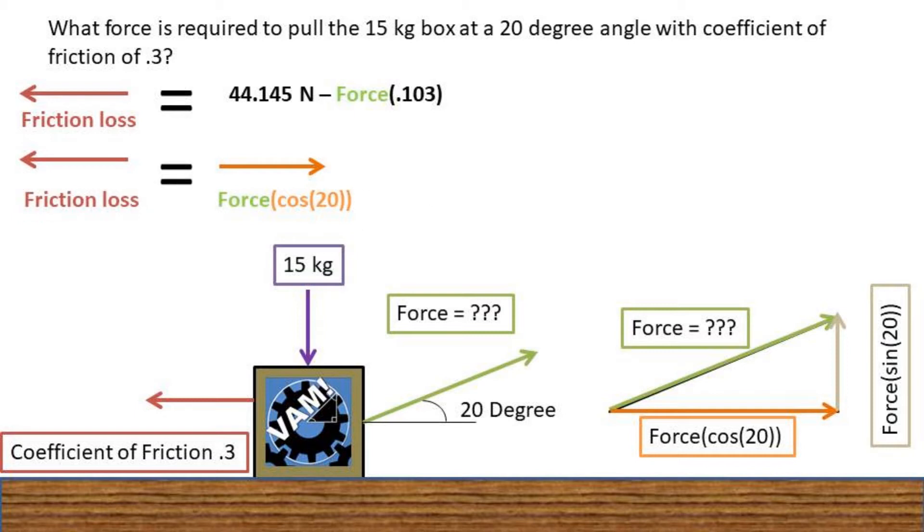Rearranging this, we get friction loss to be equal to the force times the cosine of 20 degrees. Now we will plug in what we found friction loss to be equal to.